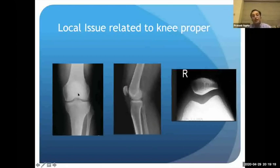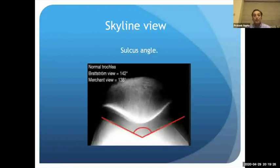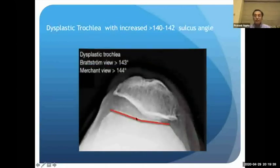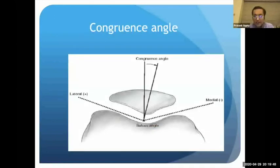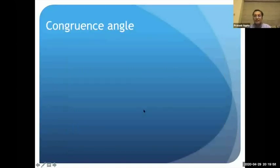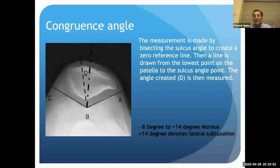On the skyline view, the sulcus angle is calculated by drawing two lines from the deepest point of the trochlea along each facet. Normally less than 144 degrees; if more than 144 degrees, it indicates a dysplastic trochlea which predisposes to dislocation. The congruence angle is used for subtle lateral subluxation: bisecting the sulcus and drawing a line from the lowermost part of the patella — if more than 14 degrees, it indicates lateral subluxation.